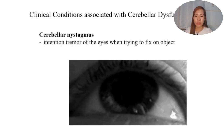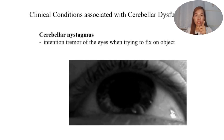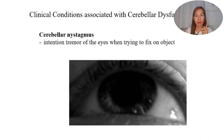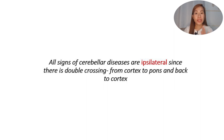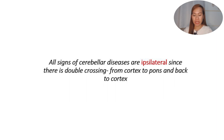We also have cerebellar nystagmus — intention tremor of the eyes when trying to fix on an object. When trying to look at a certain object, the eyes show tremor, which we call nystagmus. To conclude: all signs of cerebellar disease are always ipsilateral — on the same side of the body — because there is double crossing from the cortex to the pons and back to the cortex, which results in an ipsilateral manifestation of cerebellar diseases.